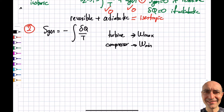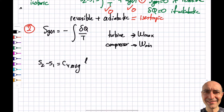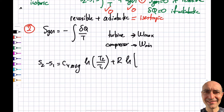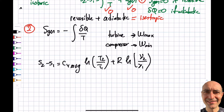For a turbine, the absolute maximum power output assumes an isentropic process. For a compressor or reverse Carnot-cycle system, the isentropic condition gives the minimum work input. Now let's get into the derivation, starting with the cv average and the TdS relationship applied to an ideal gas from the previous segment.